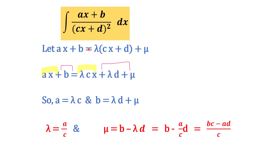The first step will be: let ax + b, which is the numerator of the given question, be equal to λ(cx + d) + μ. You have to learn that the numerator be put equal to λ(cx + d) + μ. Now open this bracket. You will get on the left hand side: ax + b = λcx + λd + μ.